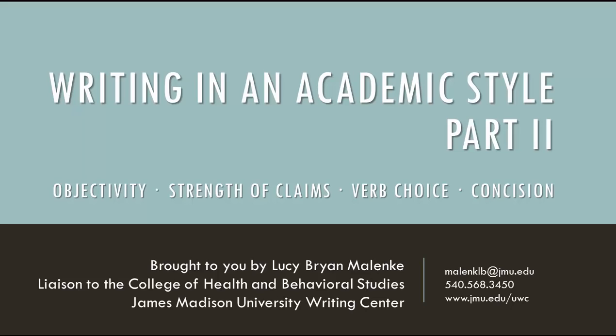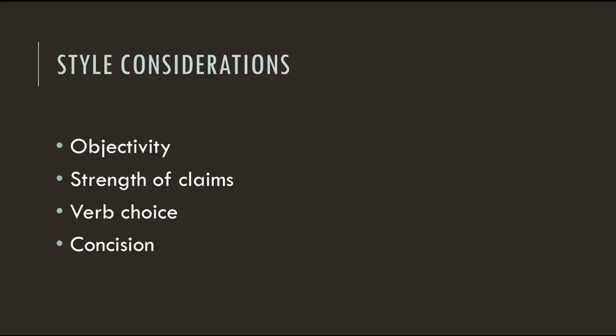Hi, this is Lucy Malenke from the James Madison University Writing Center, and this is the second in a two-part video series on writing in an academic style. In the first video, I discussed point of view, active versus passive voice, and information flow. Today, I'm going to focus on some of the language choices that impact the style of your writing. Academic writers must carefully consider objectivity, the strength of their claims, their verb choices, and how to express ideas with concision.